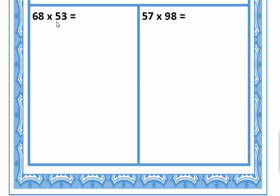So the first thing we look at is 68 times 53. Those are huge! But with partial product, it's going to be a little bit quicker. So we're going to set it up — let's put 68 on top. I'm going to start with the larger number because I like the larger number on top.